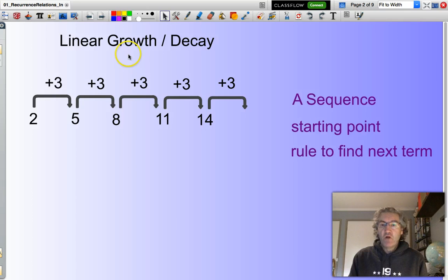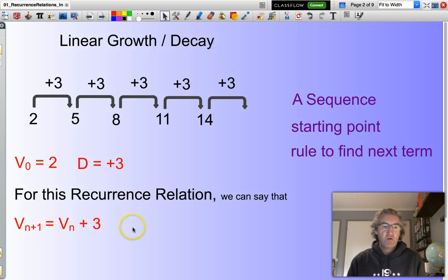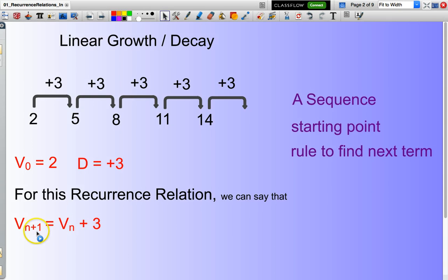Now we will be looking at linear growth or decay. For linear growth we need to consider a starting point, typically a value given this subscript of zero to indicate it's the initial value. Then we need to know the rule to find our next term. In other words how much am I increasing by - I'm increasing by a value of three. So I'll take this term here add three to it to end up with five. That is basically a recurrence relation. We can say that our next term, our n plus 1 term, equals our current term plus 3. And if we happen to have decay then the value of D is negative.